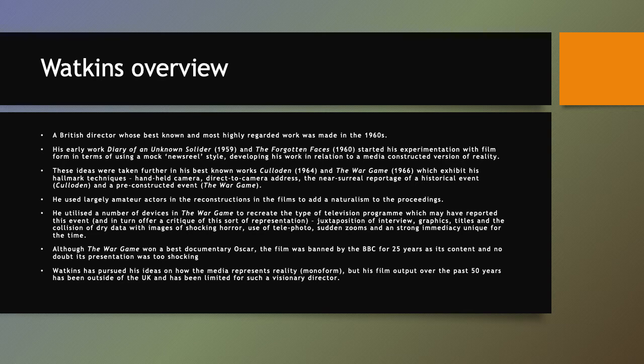Watkins borrows from elements of cinema vérité. In terms of film form we see handheld cameras and direct camera address. In Culloden in particular there is a near-surreal reportage of a historical event — he reports on a battle from hundreds of years ago as though it's really happening today. He is really playing with ideas about what is reality and how to represent it, blurring the line between fiction and non-fiction.